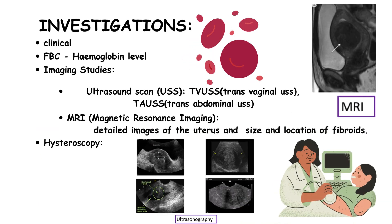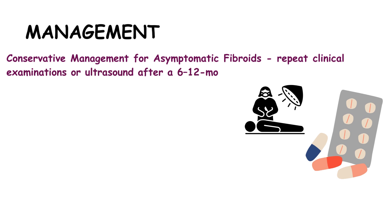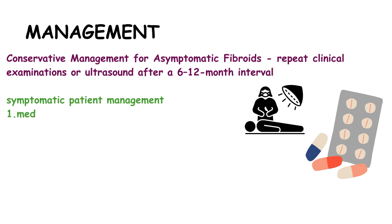Investigations: mostly clinical symptoms and signs are used for the diagnosis. A full blood count is usually investigated to check hemoglobin level. Imaging studies such as ultrasound scan — which can be transvaginal or transabdominal — and MRI scan provide detailed images of the uterus and the size and location of fibroids. Hysteroscopy is done to take a tissue sample for biopsy or to remove small fibroids or polyps. Patients with asymptomatic fibroids usually have repeat clinical examinations or ultrasound at a 6- to 12-month interval. Symptomatic patients are managed medically, surgically, or radiologically.